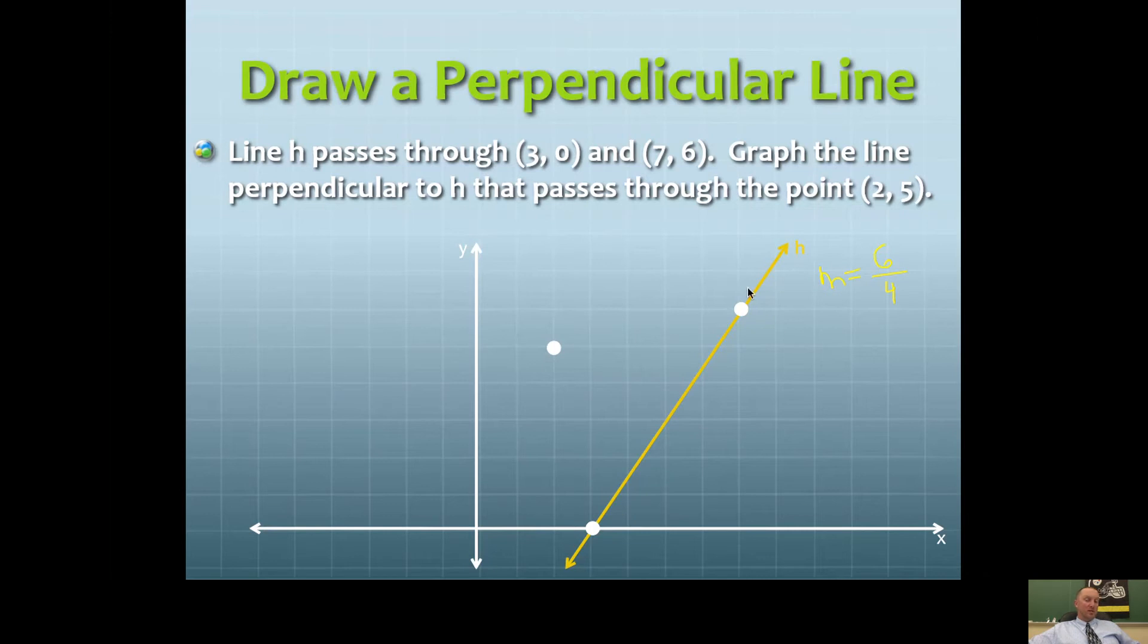That's my slope: 6/4. And it makes sense to me because it's positive, the line's going uphill. Now the only other thing I could do is maybe reduce that. 6/4 is the same thing as 3/2.